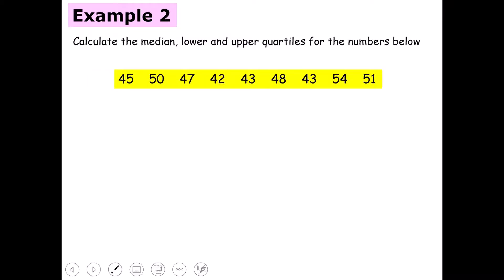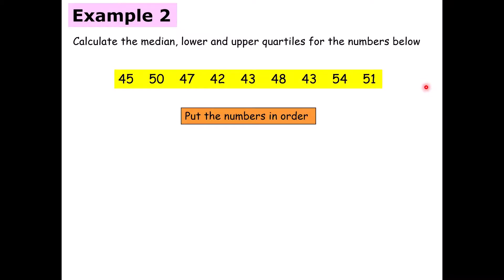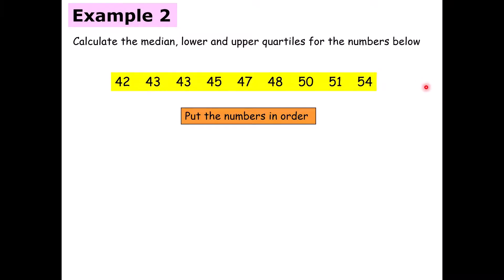Let's look at the second example — again, calculating the median, lower and upper quartiles. Here we have a set of nine numbers. Before we do anything, we must ensure the numbers are put in order — they must be in numerical order. So we reorder them like this. We have nine numbers, which is an odd number.